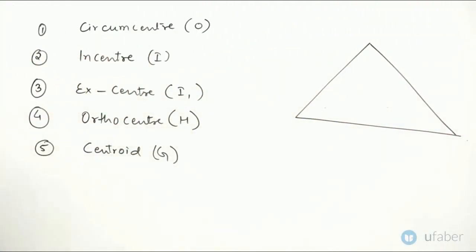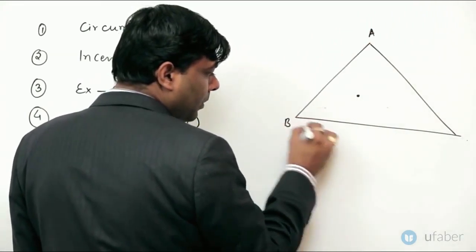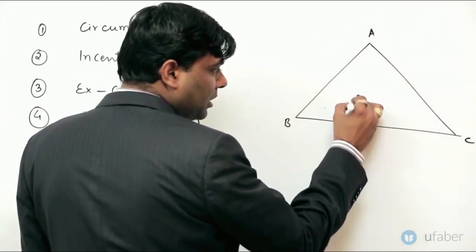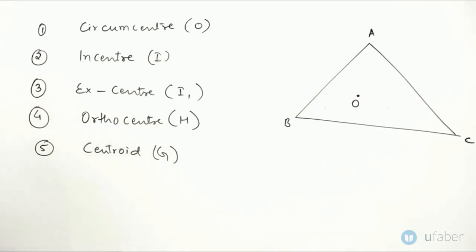Circumcenter. Where we have all the medians, we have circumcenter. So, this point is A, B, C. Let's say this point is O. Then,